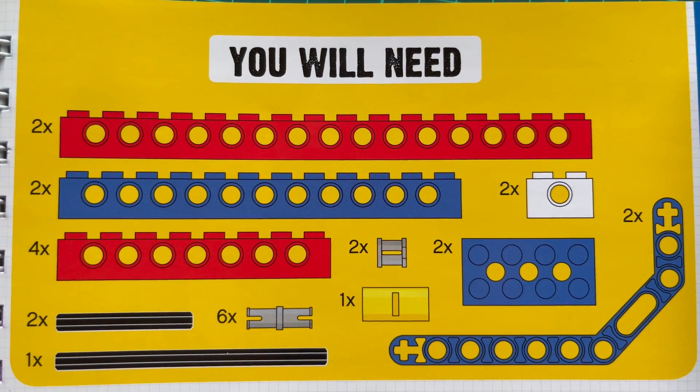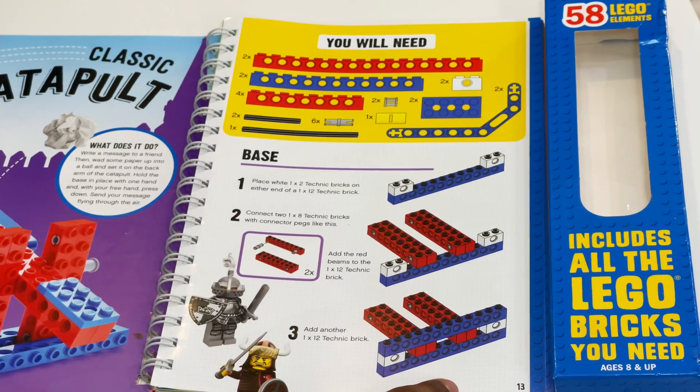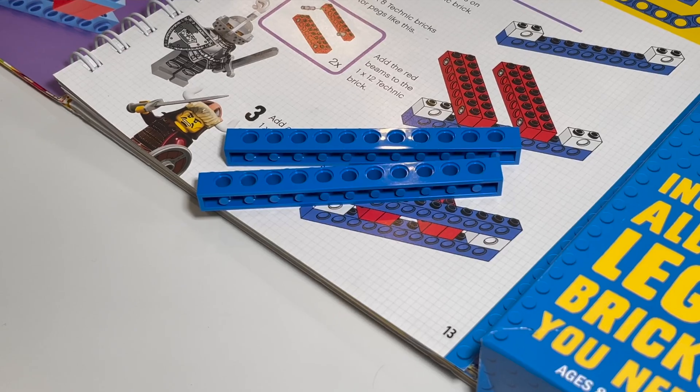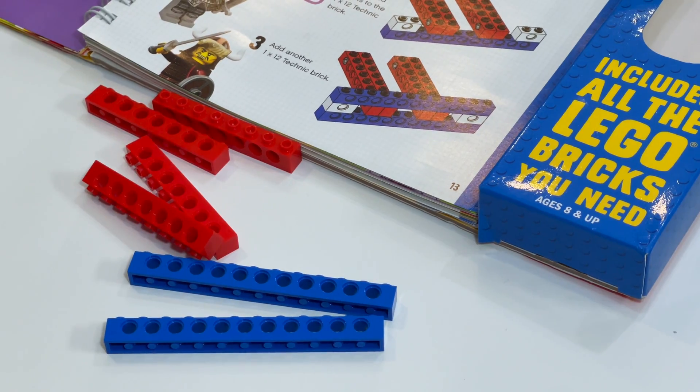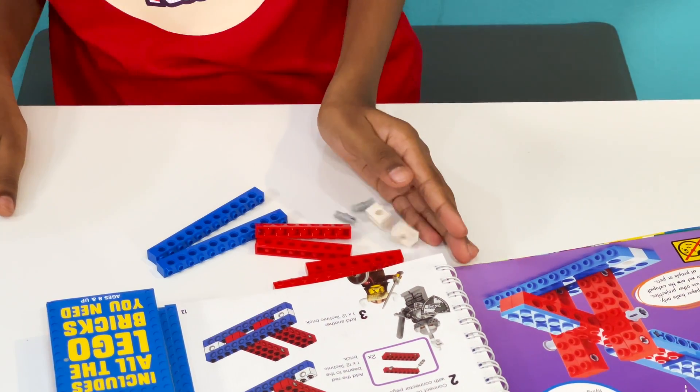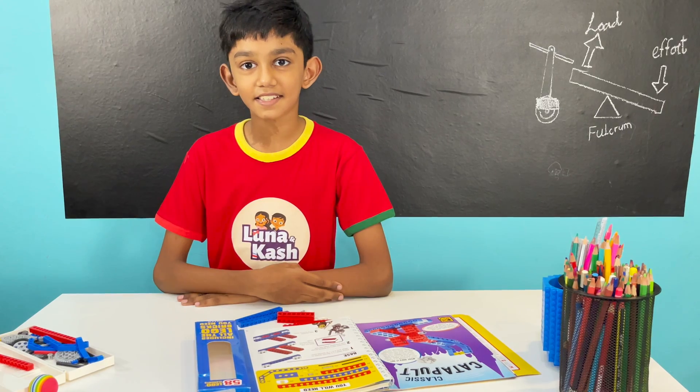These are the parts that we need. I'm going to build the base first. For the base, I need these 1 by 12 bricks. I need 4 of these, 2 of these, and the connector pegs. Now let's get started.